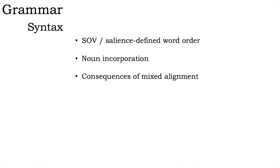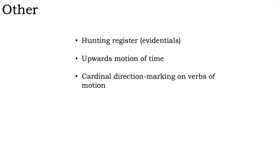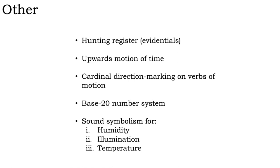Lastly, I thought I'd mention some other extras. There's a special register for hunting that uses evidentials. Time is perceived to flow upwards. Verbs of motion are obligatorily marked for cardinality — that is to say, whether or not the motion is to the north, south, east, or west. There is a base-twenty number system, because counting is fun using your fingers and your toes. And a system of sound symbolism that allows you to make single syllables containing information about how wet or dry, how bright or dark, and/or how hot or cold something is.